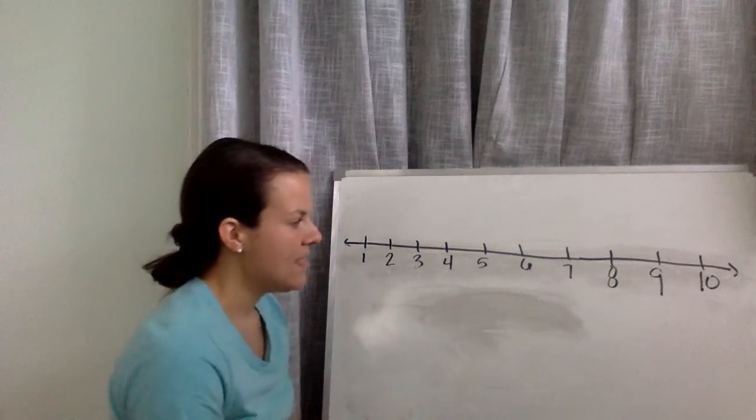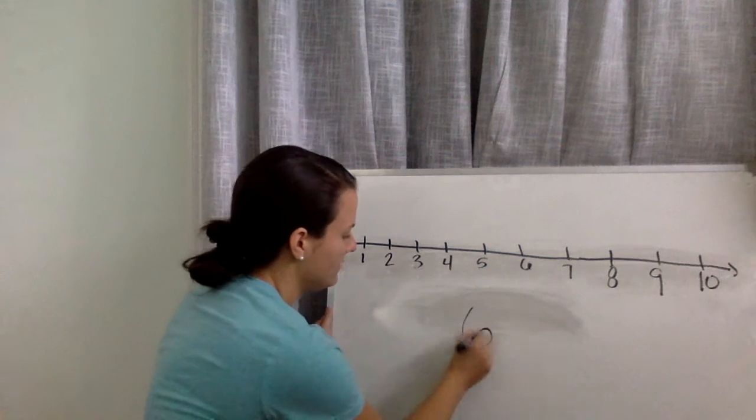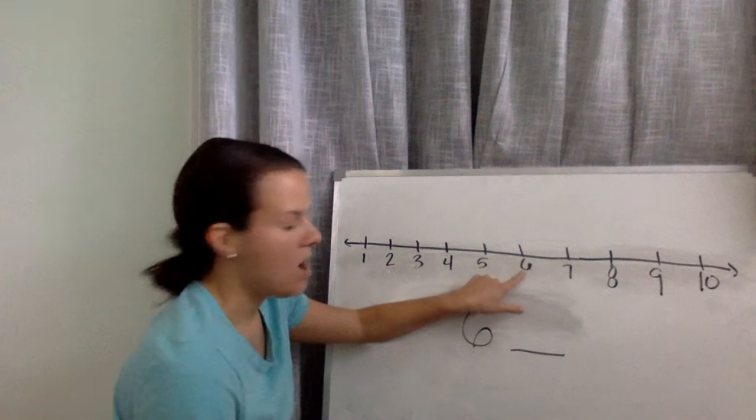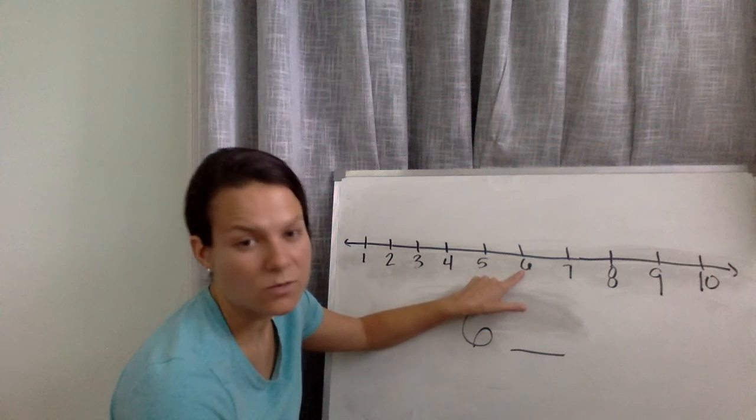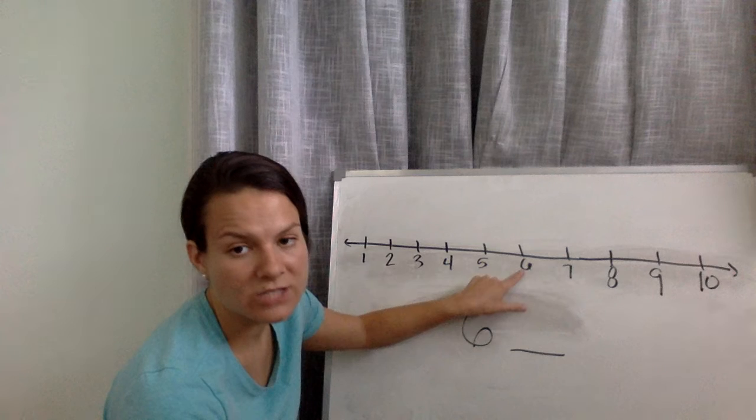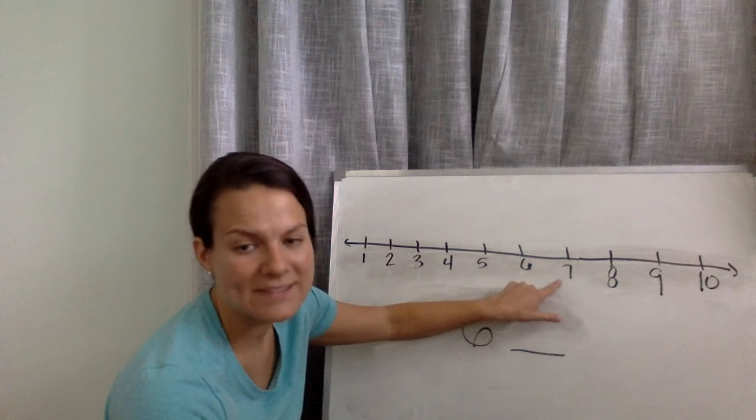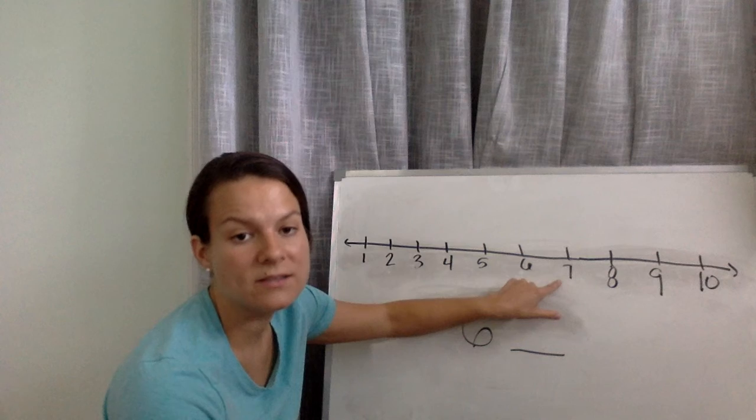Alright. How about the number 6? Put your finger on the number 6. Alright, so we're going to find the number that is one more than 6. That means that it's bigger. So let's jump. 7. Good job. 7 is one more than 6.